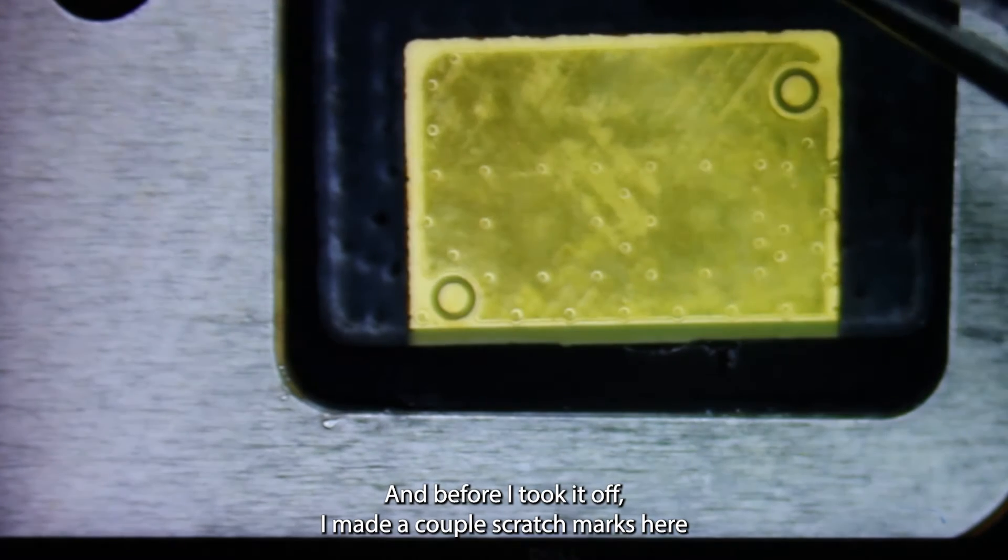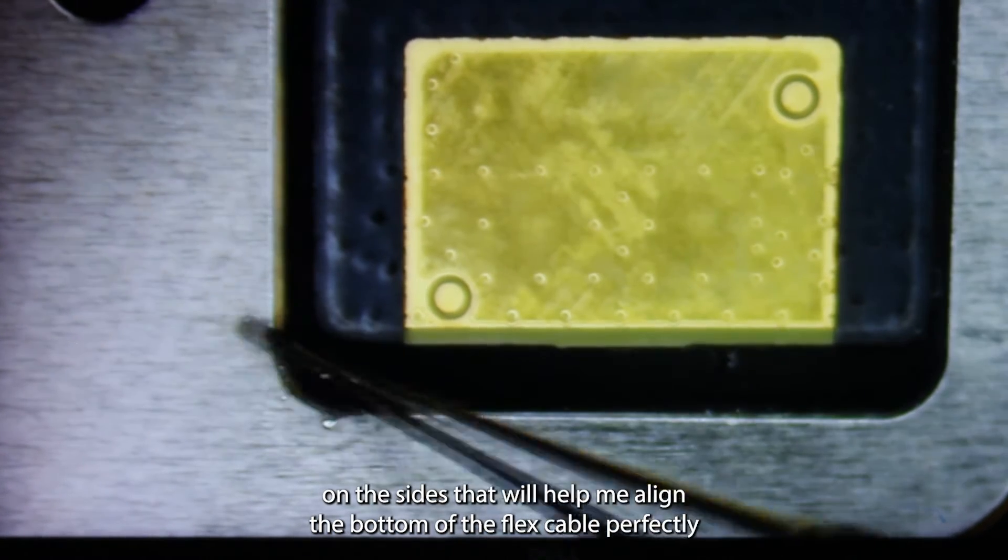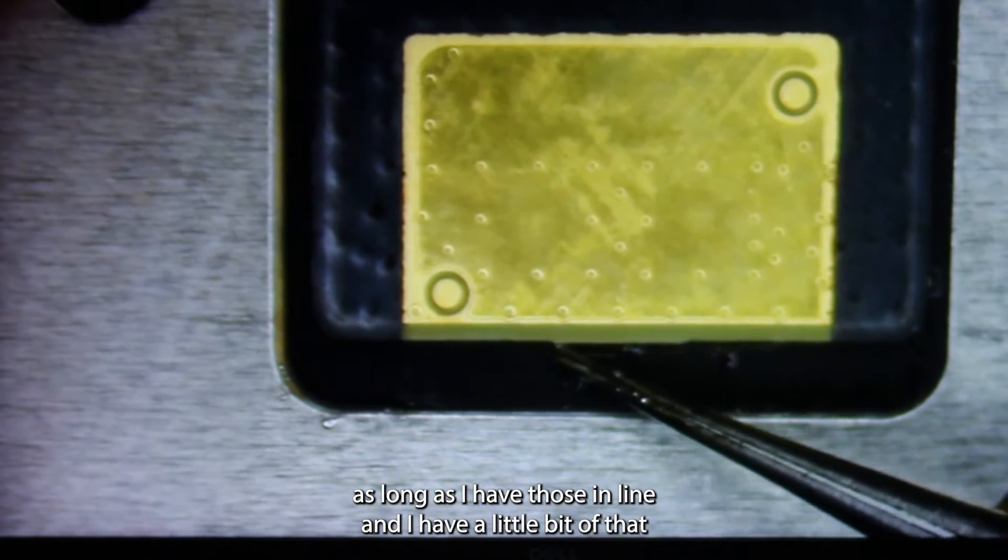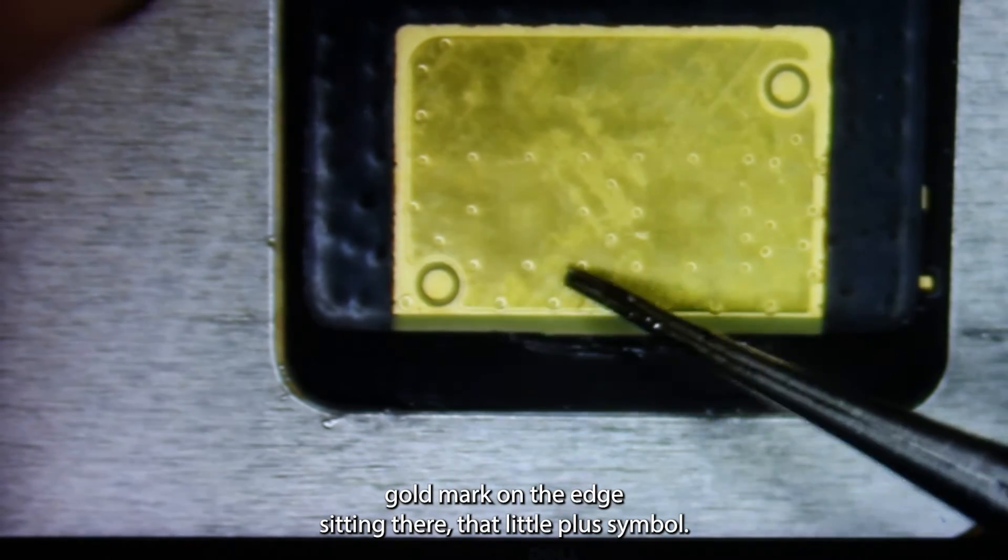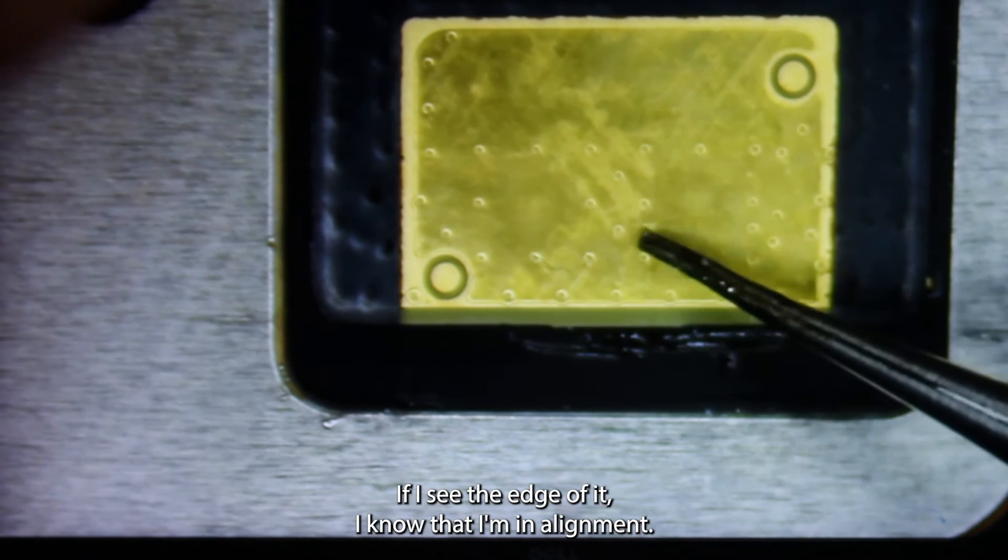Now before I took it off I made a couple scratch marks here in the sides. It'll help me align the bottom of the flex cable perfectly. As long as I have those in line and I have a little bit of that gold mark on the edge sitting there, that little plus symbol, if I see the edge of it I know that I'm in alignment.